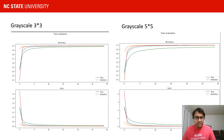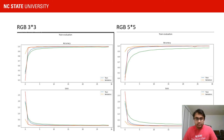Here are some sample training accuracy and loss curves on the grayscale images with varying kernel sizes, and this is the training curve for the RGB images with 3x3 and 5x5 kernels. That's it for today. Thank you.